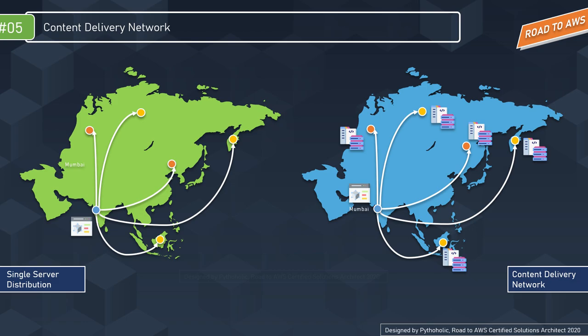With CDN, content is replicated and stored throughout the network so users can access data at a location geographically closest to them. This is more efficient than storing content on a single central server. The user accesses a copy of the data near to the client, as opposed to all clients accessing the same central server, avoiding bottlenecks near the server.